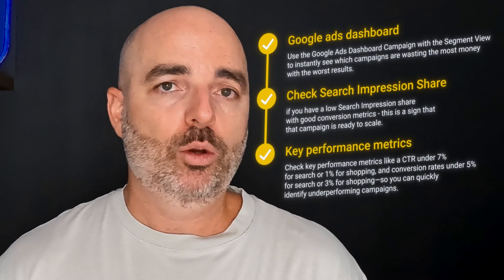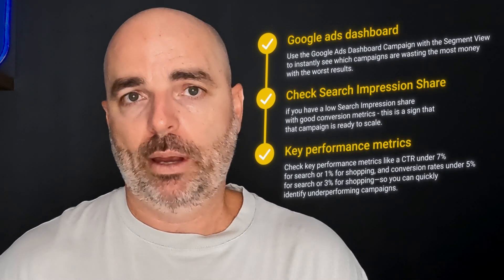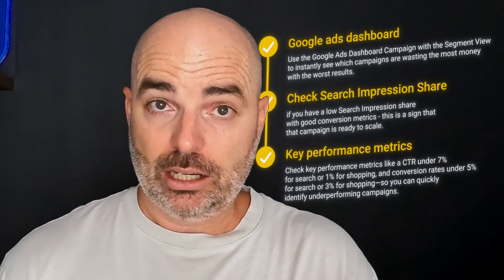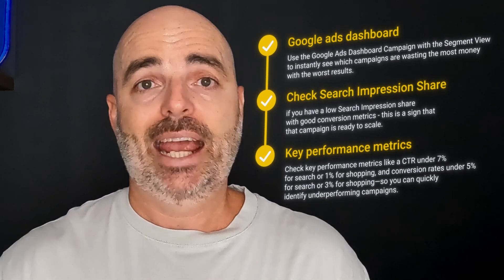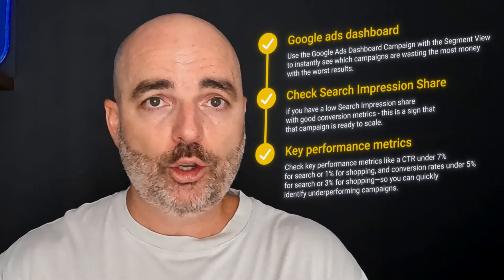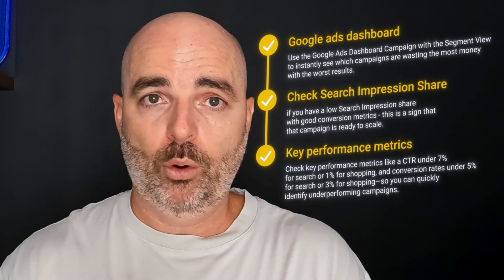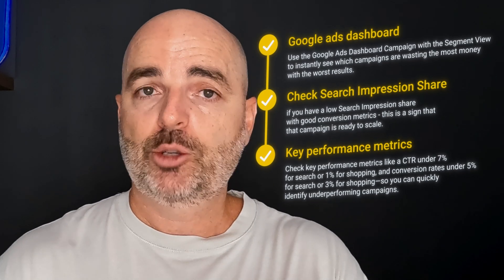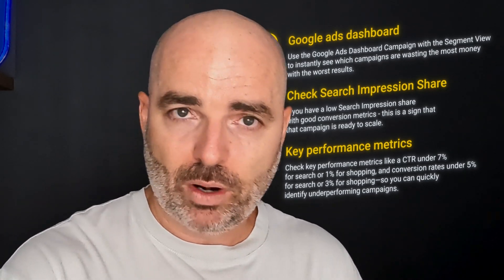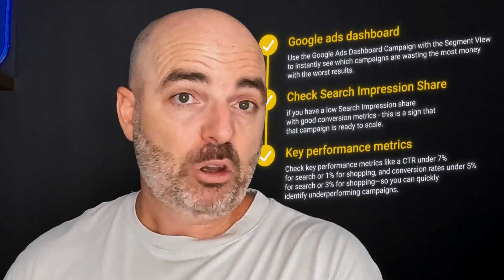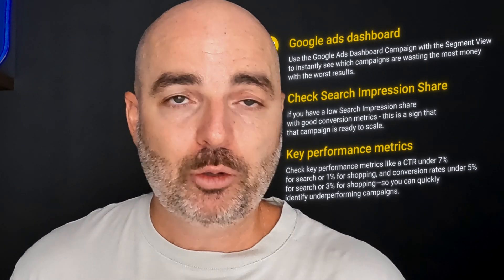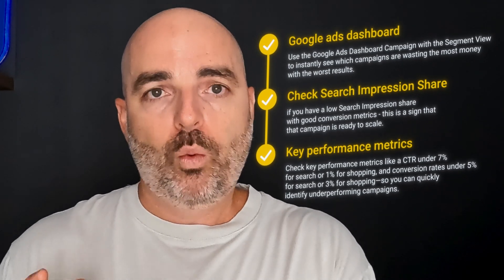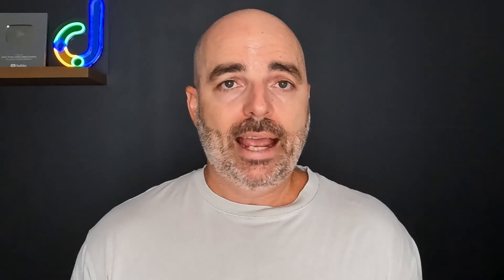The third step of the process is looking at some core metrics, especially around our click-through ratio and conversion rates. Our click-through ratio speaks to the quality and relevance of our ads, and conversion rate lets us know where we need to look in terms of landing page or offer performance.